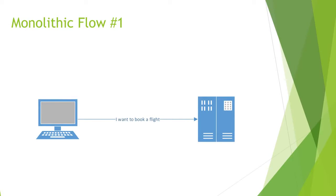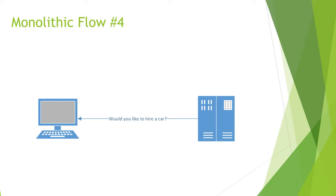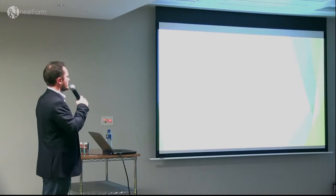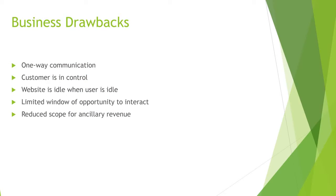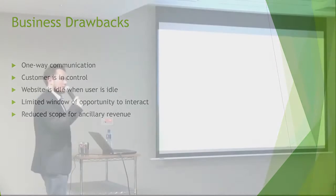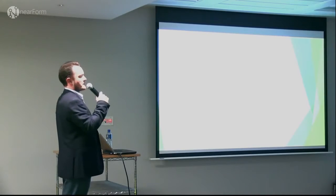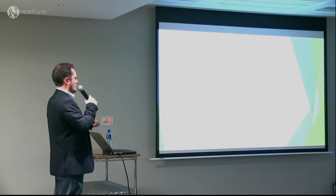Let's consider the old monolithic flow. We've got a big monolith — the client says I want to book a flight, here are available flights, I want to book one, would you like to hire a car too, et cetera. The problem is it's one-way communication — the customer is in complete control, and the website is idle when the user is idle. From a business perspective, we have a limited window of opportunity to interact with the user. We have to catch them on the fly every time. The scope of opportunity to interact is very much reduced, which reduces potential for ancillary revenue outside the concept of buying plane tickets.